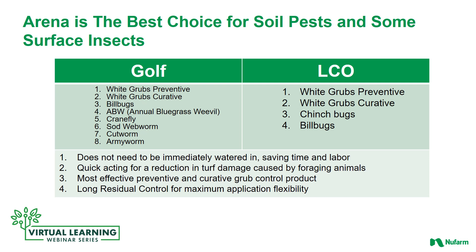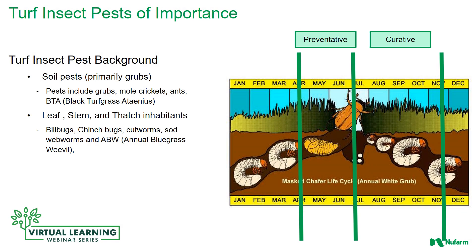Annual bluegrass weevil is a pest that has come out of the northeast and as far west as Ohio. There have also been reports of crane fly larvae causing trouble in western New York and parts of Michigan. Arena does not need to be immediately watered in, which can save time and labor.